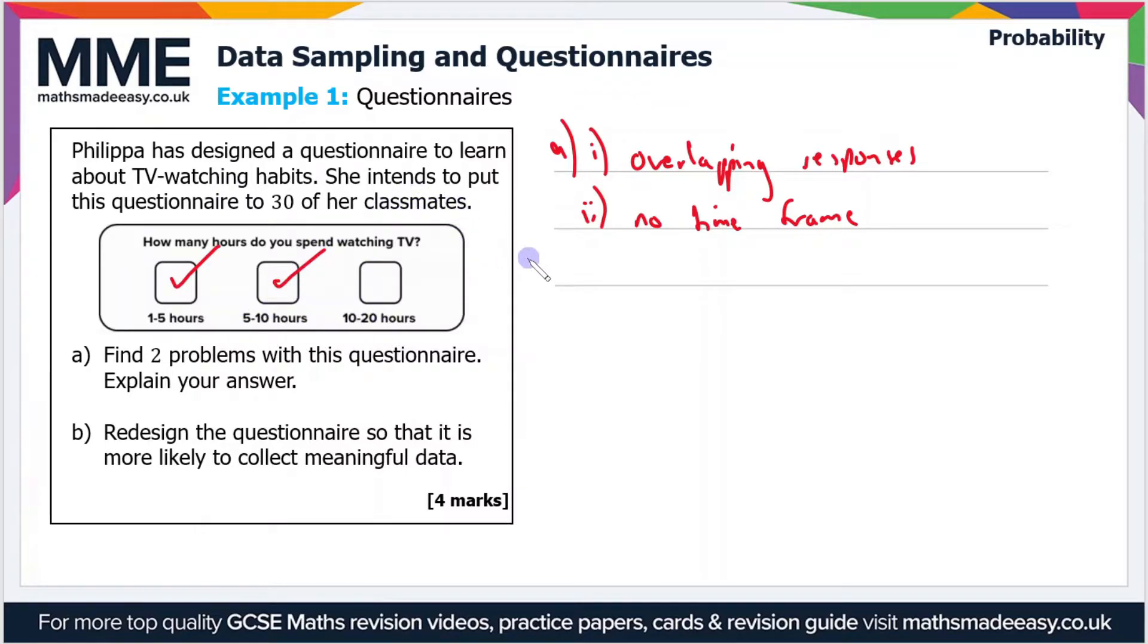And then the final one is that it's likely to give biased results, and that's because she's only asking her classmates. So to get more accurate results or more reliable results, she should be asking a wider variety of people, from different age groups, for example.